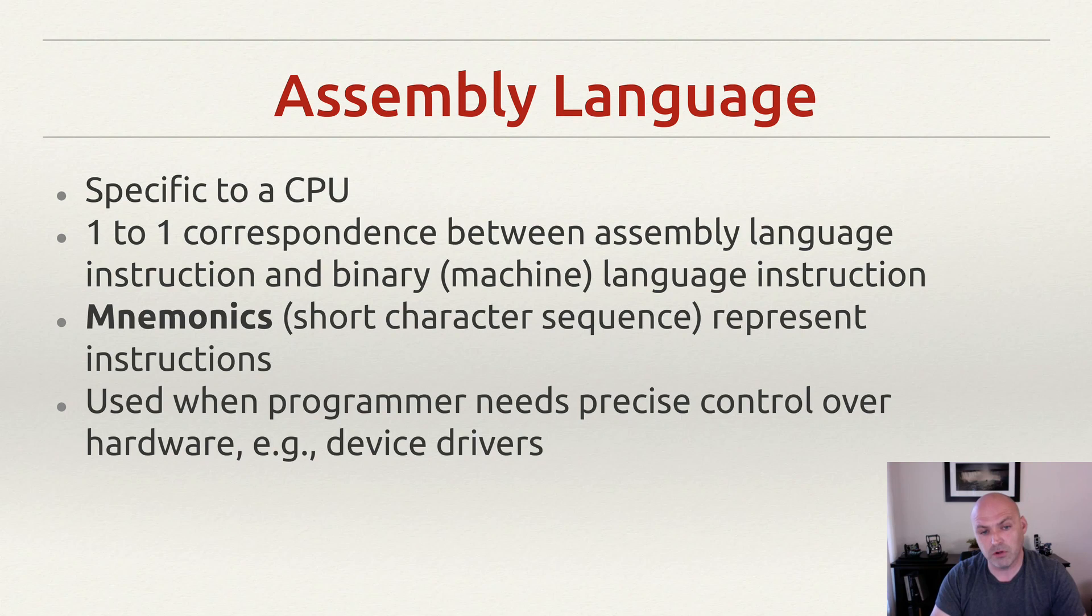So assembly language is just a one-to-one correlation with machine instruction. Instead of having to remember the actual numbers for the instruction, we can instead remember the assembly language mnemonic. So when you assemble, which means you take assembly language and create instructions, what you're actually doing or what the machine is doing on your behalf is just translating your mnemonic to the actual instruction. It's a one-to-one correlation.